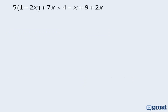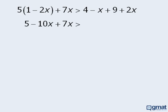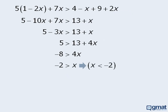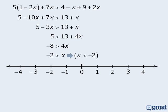To solve this next inequality, we'll first expand the left-hand side and simplify the right-hand side, then simplify the left-hand side. Next, we add 3x to both sides, subtract 13 from both sides, and then divide both sides by 4 to get negative 2 is greater than x, or equivalently x is less than negative 2. To show this on the number line, we draw a circle around negative 2 and draw an arrow to the left. Any point on the blue line is a solution to the original inequality.